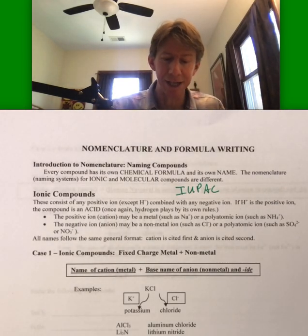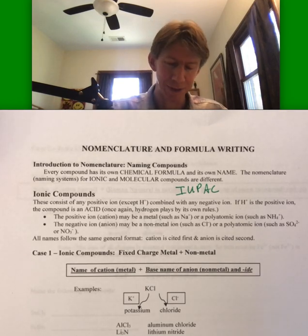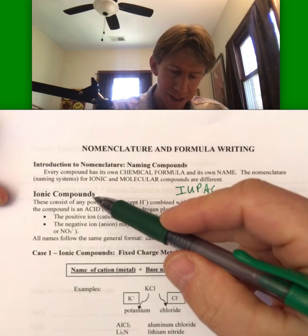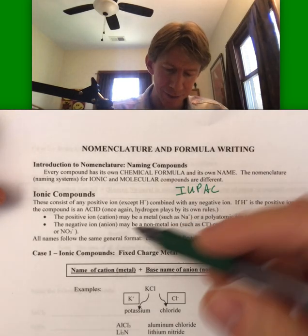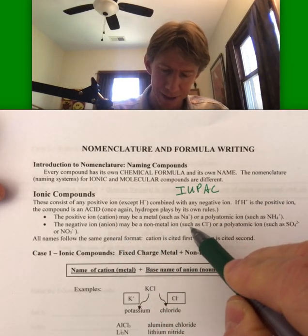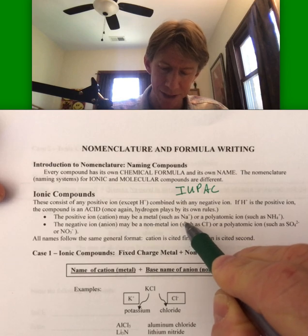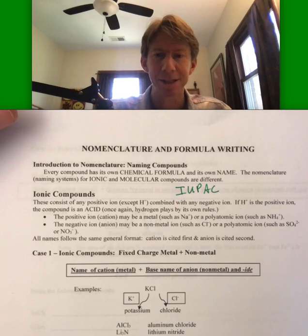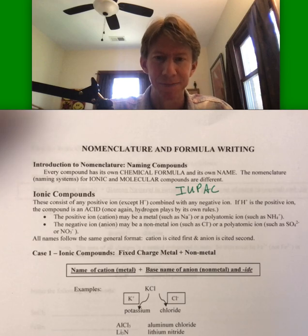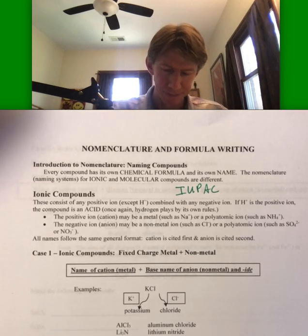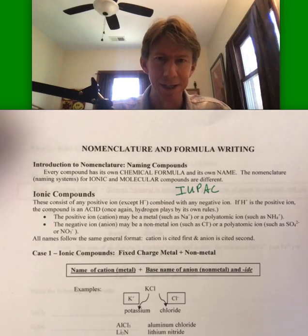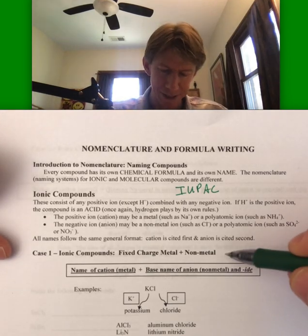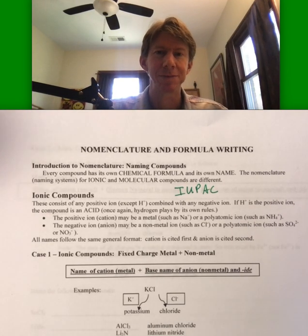Specifically turn to the ion page right now because we're going to start naming ionic compounds. Ionic compounds consist of a positive ion, a cation — oftentimes a metal such as sodium, but also the polyatomic ion ammonium can be a cation — and the negative ion or the anion. There are a number of ways to name these, but the first method involves ionic compounds.